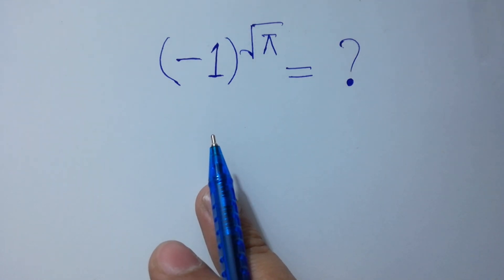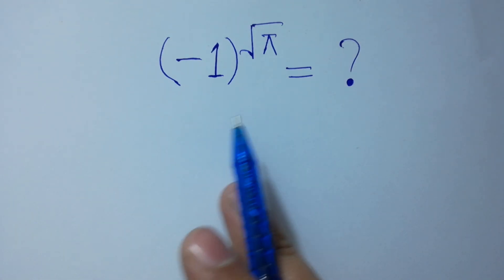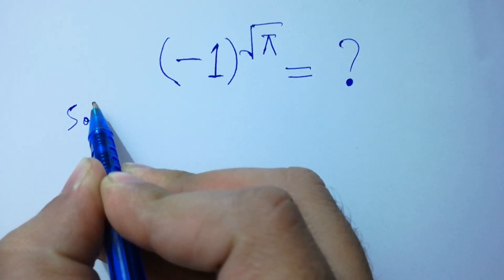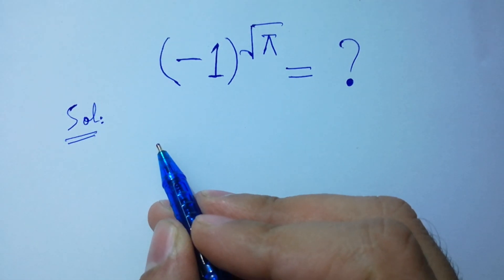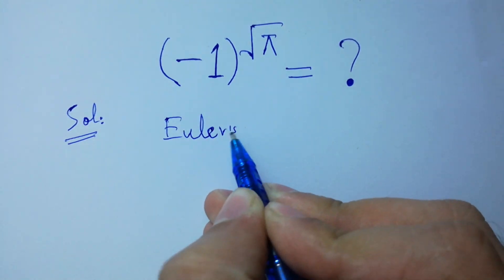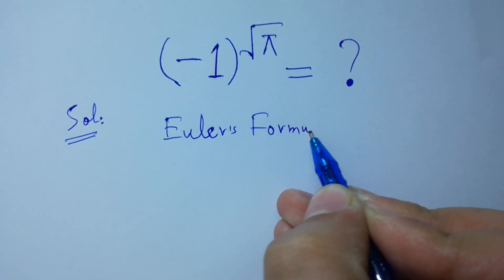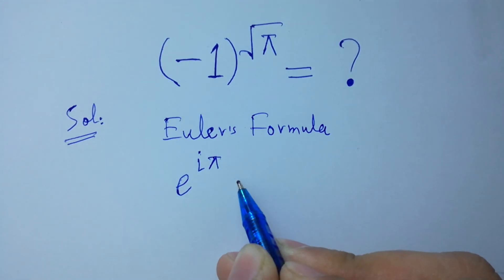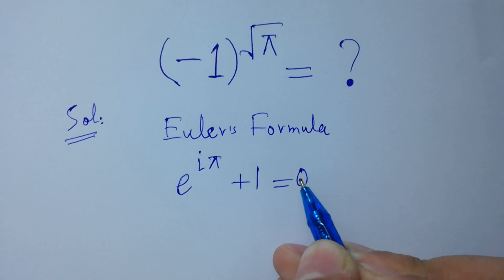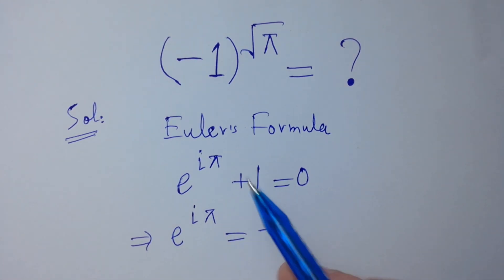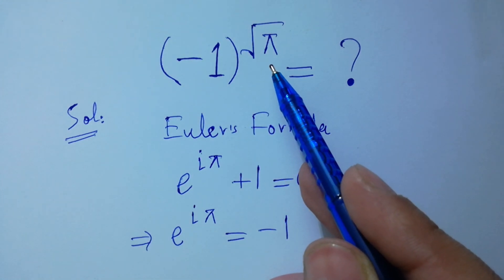Hello friends, many will feel: minus 1 to the whole power pi is equal to what? Let's find a solution. According to Euler's formula, e to the power i*pi plus 1 equals 0, which gives us e to the power i*pi equals minus 1.